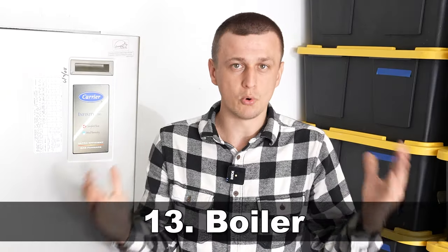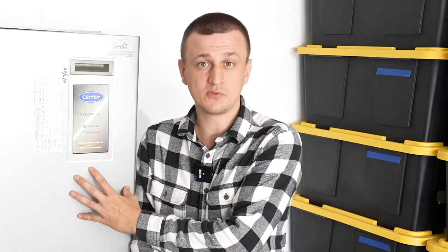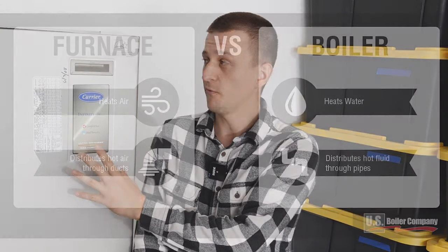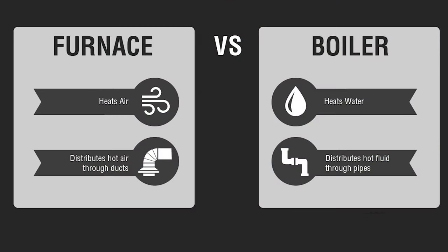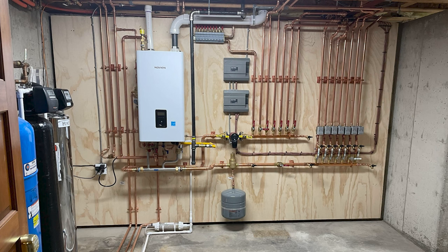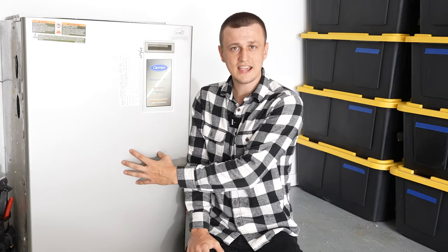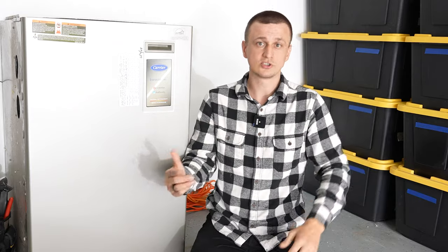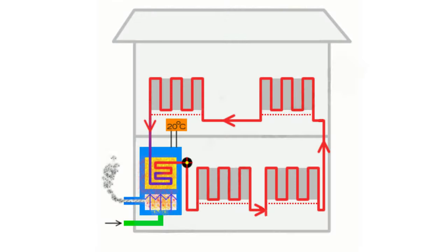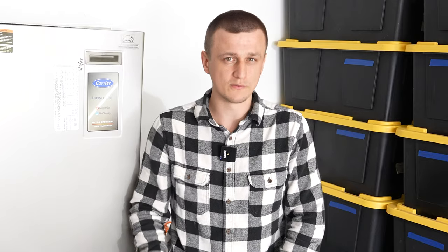Number 13 is a boiler, which only heats the house — it does not do any cooling, but it's quite a bit different than a forced air furnace. A forced air furnace has ductwork that blows air through it, whereas a boiler has water that it distributes in pipes all throughout the house to radiators or baseboards. Instead of a blower motor, a boiler circulates water throughout the pipes in the house back and forth.